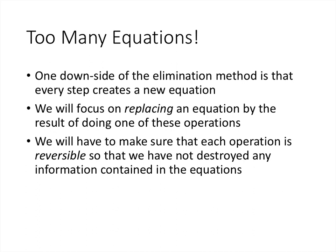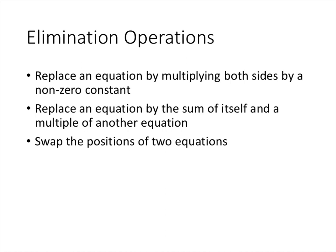For example, one thing we won't ever want to do is multiply both sides by 0 — that would destroy the equation's information and replace it with 0 equals 0. So we always want to make sure each step can be reversed. The allowed operations: we can replace an equation by multiplying both sides by a non-zero constant, which is reversible because we can always divide by that non-zero constant to get back to the original.